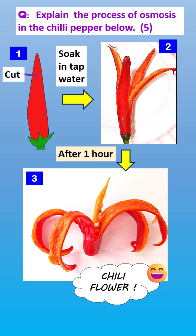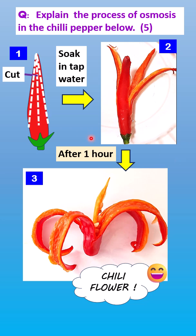Here is a very good forecast question for the exam based on osmosis: explain the process of osmosis in the chili pepper below — five marks. You can try this yourself too: take a chili and cut it longitudinally into many strips that are still connected at the bottom.